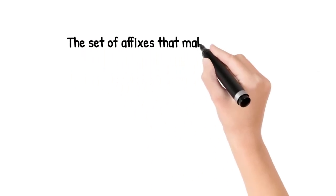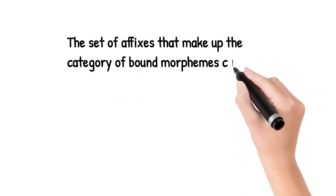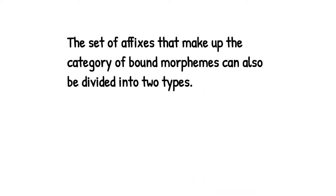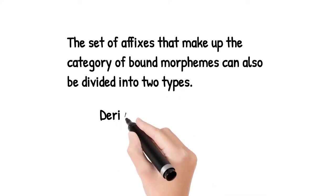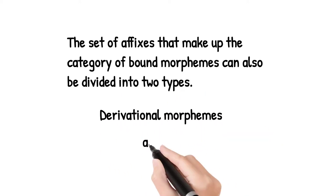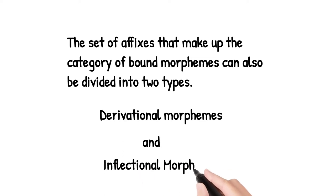As we know, the set of affixes that make up the category of bound morphemes can also be divided into two types: derivational morphemes and inflectional morphemes. In the English language, many affixes we consider bound morphemes, and in bound morphemes we categorize derivational morphemes and inflectional morphemes. Now we will explain derivational morphemes and inflectional morphemes with examples.